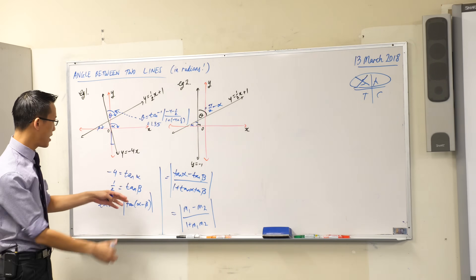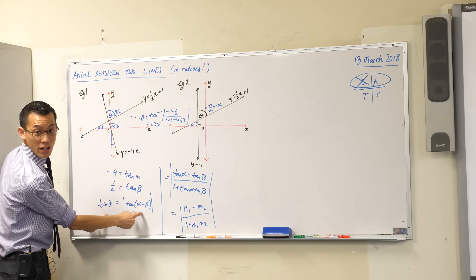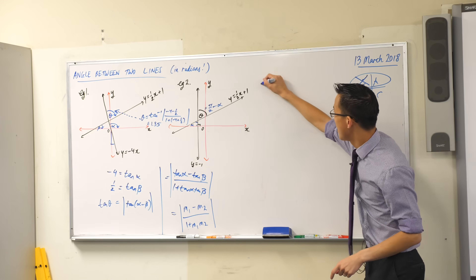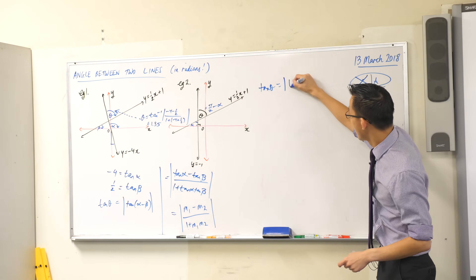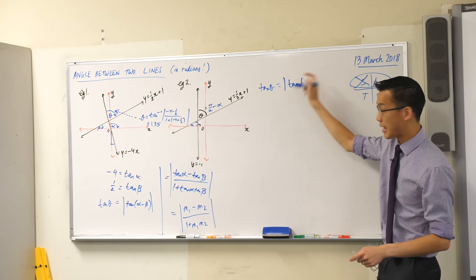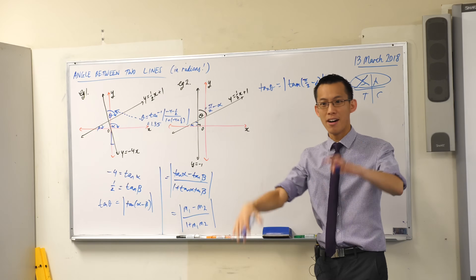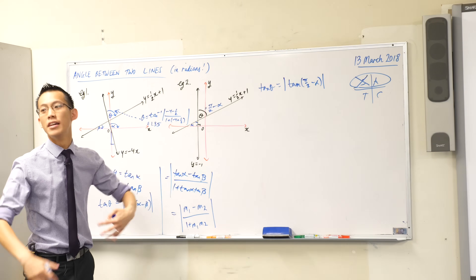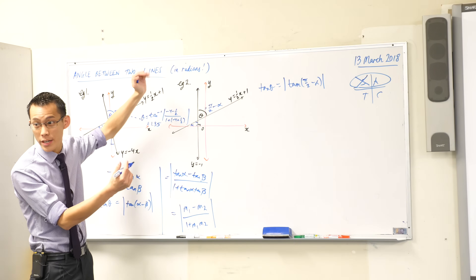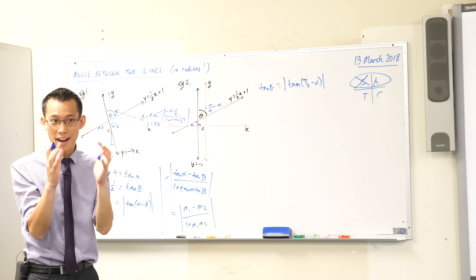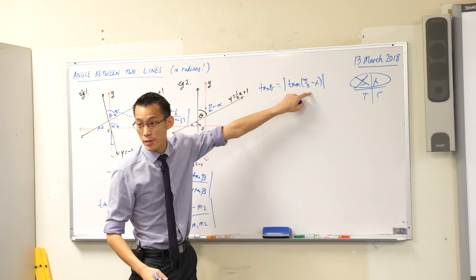So instead of going through this road where it's the difference, I can just say I know what this is. In this case, tan theta is going to be equal to the absolute value of tan of, in this case, π on 2 minus alpha. Now I went to all the effort to point out that they're complementary — this theta that I'm after, and the alpha that I can work out through normal trig. But remember, half of the trig ratios you know about are defined by being a complementary relationship.